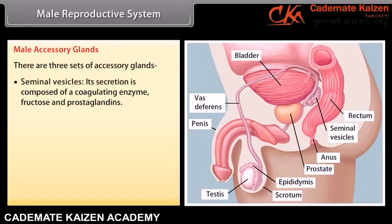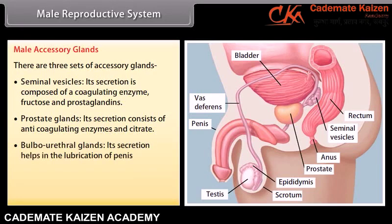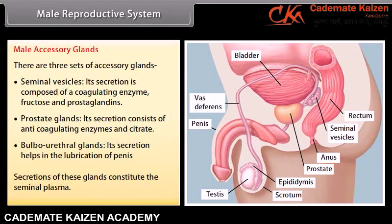There are three sets of male accessory glands. The seminal vesicles secrete a coagulating enzyme, fructose, and prostaglandins. The prostate glands secrete anticoagulating enzymes and citrate. The bulbourethral glands secrete a fluid that helps in lubrication of the penis. Secretions of these glands constitute the seminal plasma.